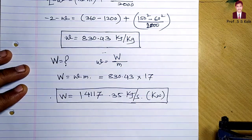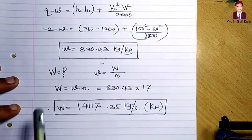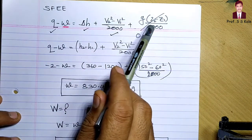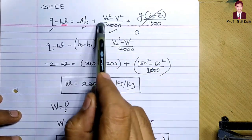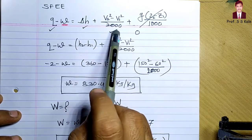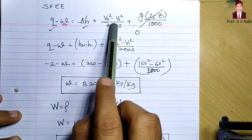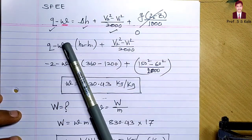For a turbine problem using the steady flow energy equation, generally we neglect change in kinetic energy and change in potential energy. But if change in kinetic energy is given in the problem, then we must consider it; if it is not given, then we neglect it. Thank you very much.